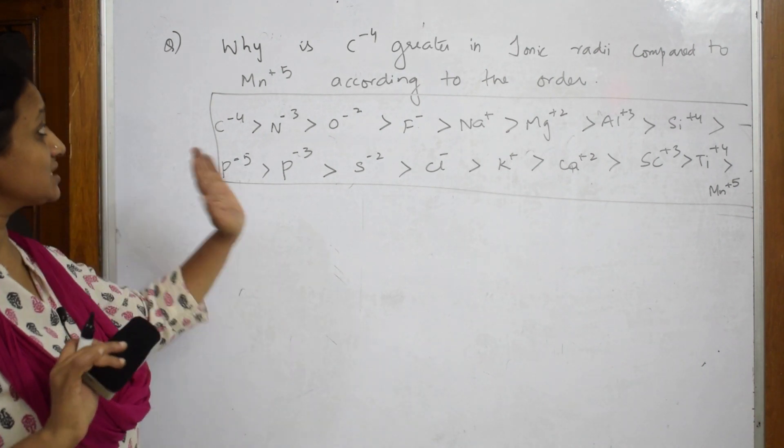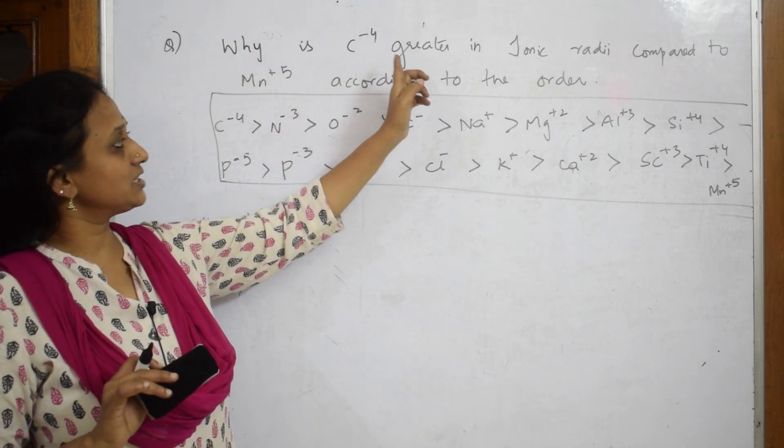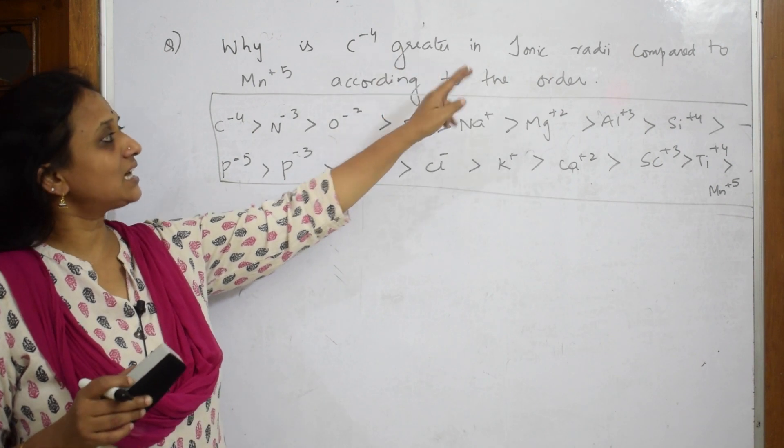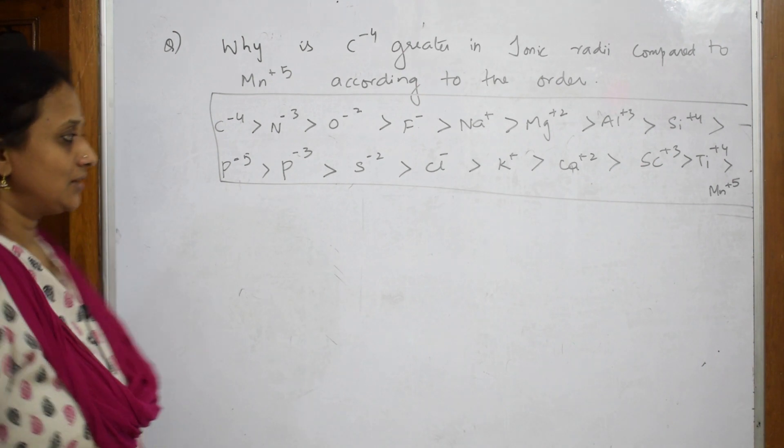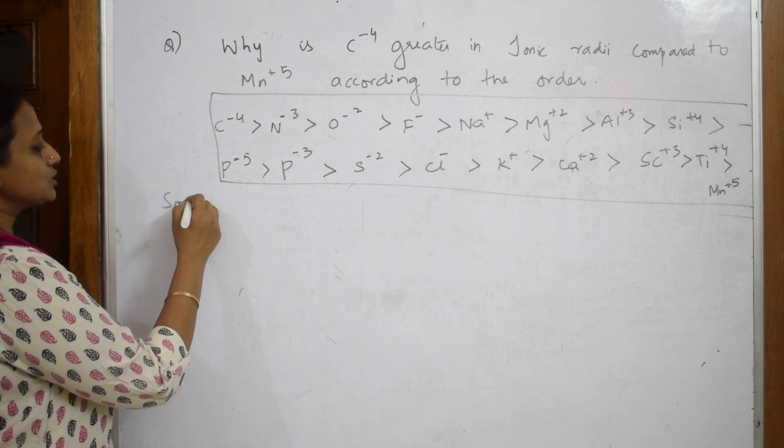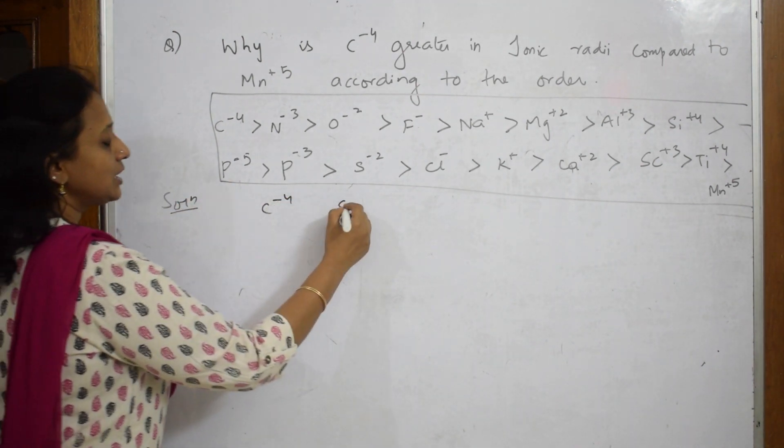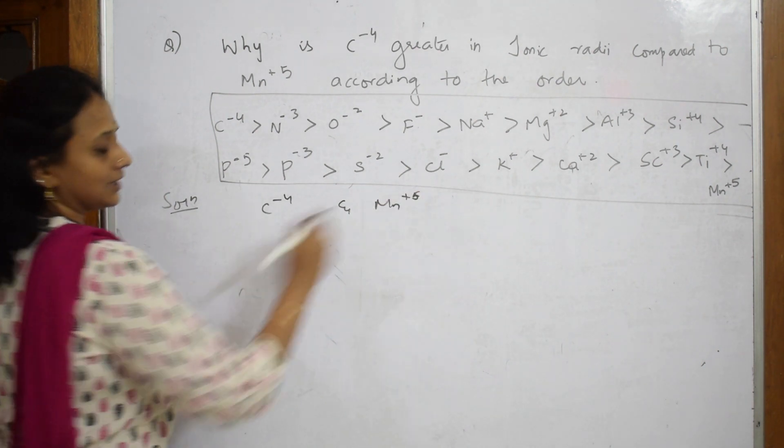What is given? Why is C^-4 ion greater in ionic radii compared to Mn^+5 ion according to the order? They have given us a comparison between C^-4 and Mn^+5.